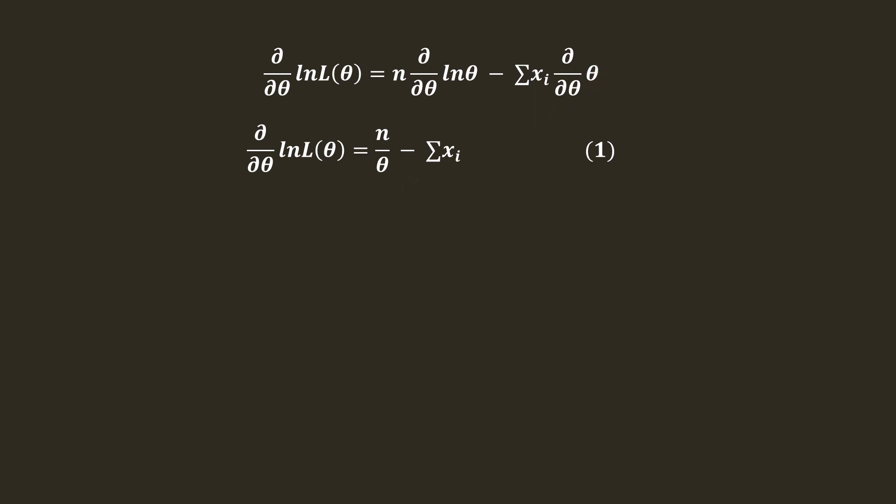So it becomes n/θ minus summation xi. Put first derivative equal to 0. We get n/θ minus summation xi equals 0. Therefore n/θ equals summation xi, and θ equals n over summation xi.